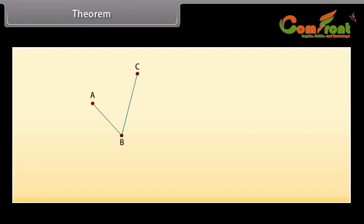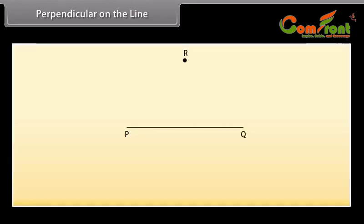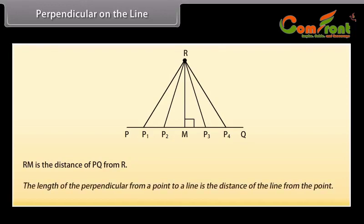Theorem: There is one and only one circle passing through three given non-collinear points. If we take a line PQ and a point R outside it, there are infinite number of points on the line — say P1, P2, M, P3, and P4. Joining these points to R, we can see that RM is perpendicular to PQ, so RM is the distance of PQ from R. Or we can say that the length of the perpendicular from a point to a line is the distance of the line from the point.